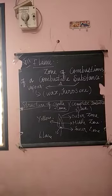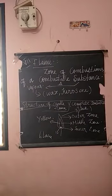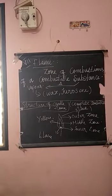So this is about the structure of the candle flame — three zones: outer zone, middle zone, and inner zone. The inner zone is black in color and the least hot part. The middle zone is yellow in color and is the moderately hot part. The outer zone is blue in color and is the very hottest part of the flame.